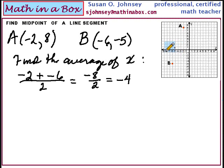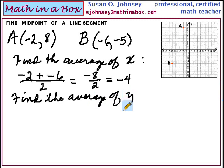Now let's find the average for the y values. What are our y values? For point A, we have 8. For point B, we have a negative 5. And remember we add these and divide by 2.